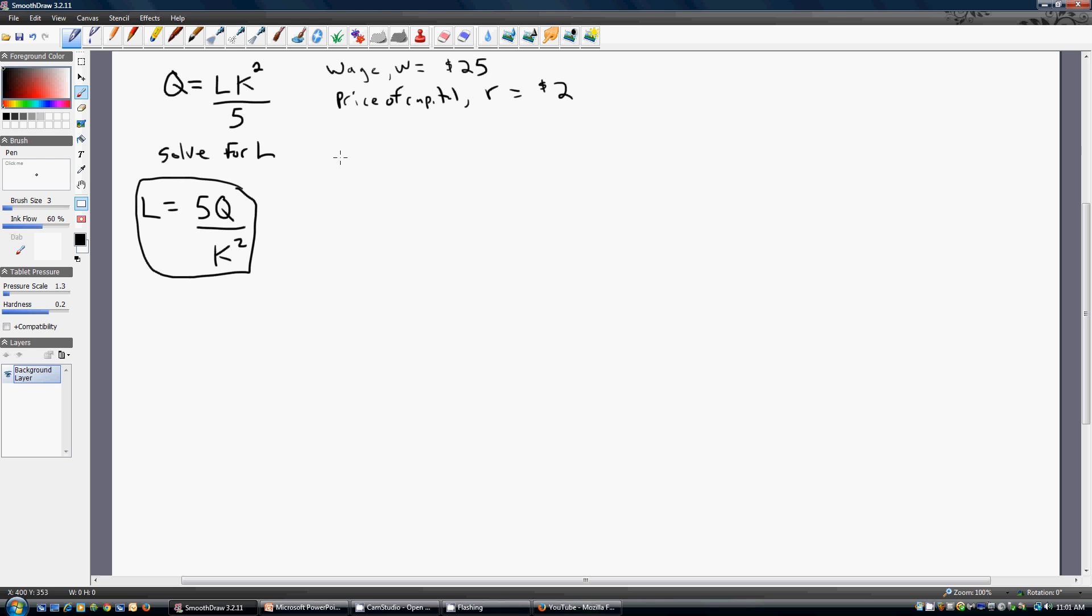Now let's set up our short-run total cost function. Our short-run total cost function, in general, can be thought of as our variable cost, the wage times units of labor, plus our fixed cost, price of capital times units of capital. Next step is, substitute in for W. We're going to put 25. We're going to substitute in for R. We're going to put the $2 in there for R. And now we've got short-run total cost equals 25 times L plus 2 times K. The next important step is to take this 5Q divided by K squared and plug it into our short-run total cost equation.